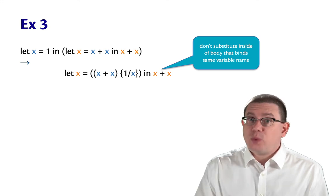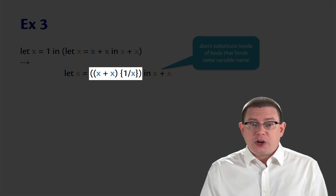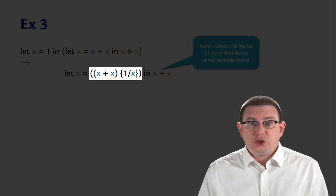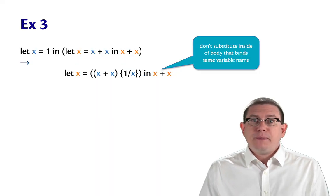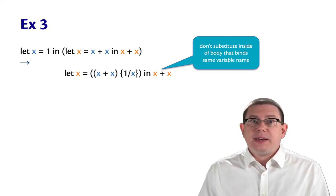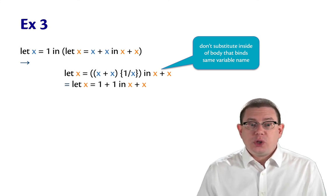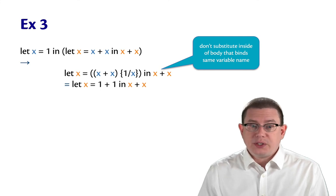But, and this is what's different from the previous example, inside the binding expression, we do want to do a substitution. Because the blue x plus x there really does mean the binding of x to 1. So that substitution will occur and reduce the blue x plus x to 1 plus 1.